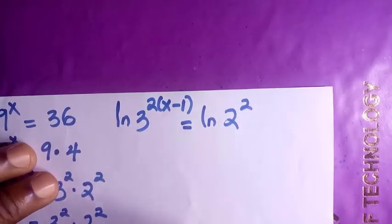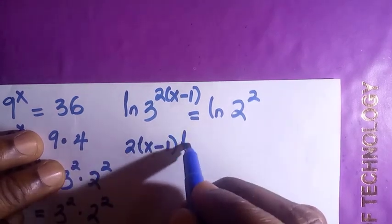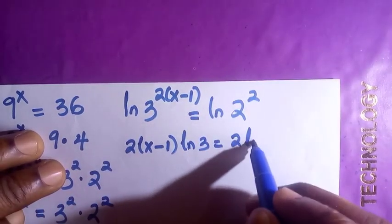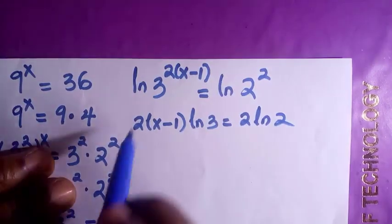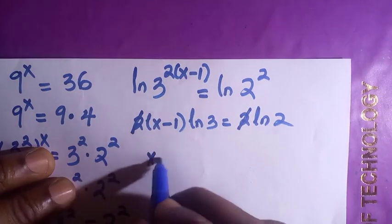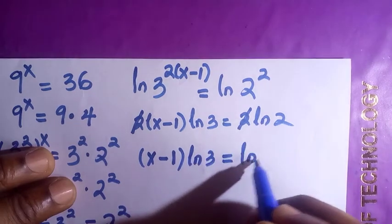And so if the power comes to the back, it serves as coefficient. So we have 2 bracket x minus 1 ln of 3 equals to 2 ln 2. So we have x minus 1 bracket ln of 3 equals to ln 2.